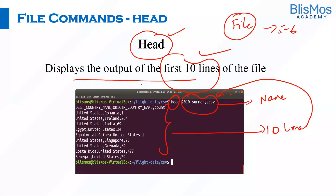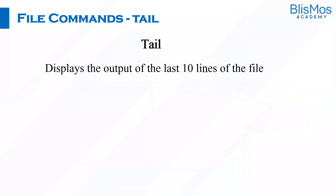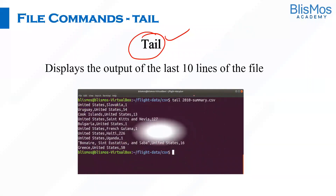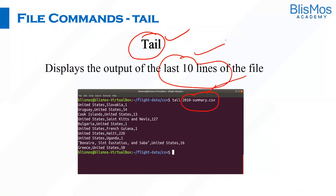Head displays the first 10 lines of the file. What if you want to get the last 10 lines of the file? That is where we have a command called tail. If you say tail and provide the name of the file, it will display the last 10 lines. The use cases may be different — for some purposes you want to see the first 10 lines, use head; for some purposes you want to see the last 10 lines, use tail.